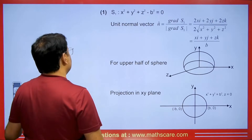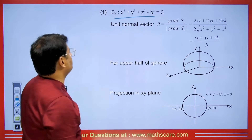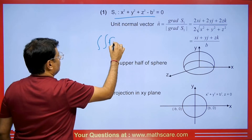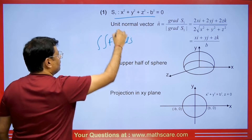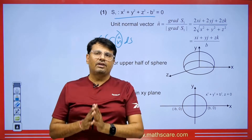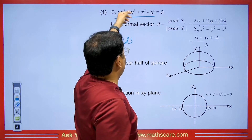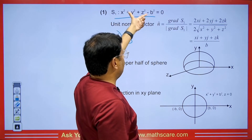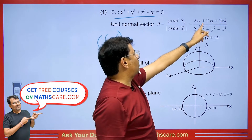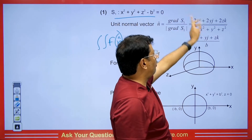Now we will see how to solve it without converting — using the surface integral directly. First, we take the outer sphere: x² + y² + z² − b² = 0. We need the unit normal vector n̂ = grad(S1) / |grad(S1)|. Computing the gradient and simplifying, since x² + y² + z² = b², the denominator becomes b, and the 2s cancel out. So we obtain the value of n̂.